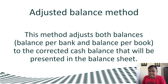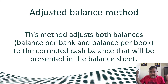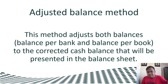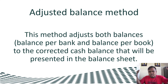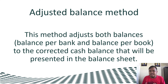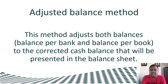In the adjusted balance method — which is our focus for this discussion — we adjust both the balance per bank and the balance per book to arrive at the corrected cash balance that will be presented in the balance sheet, or statement of financial position.